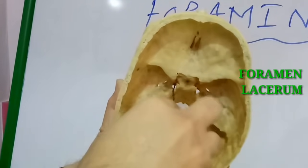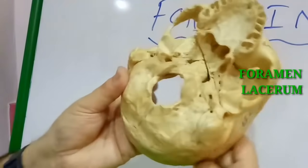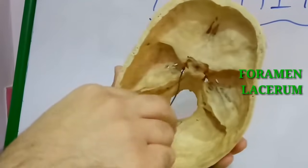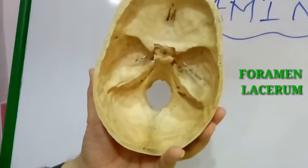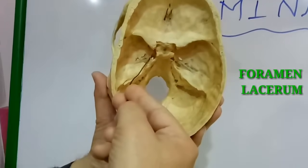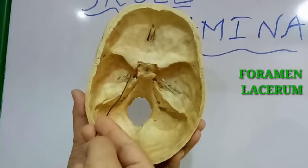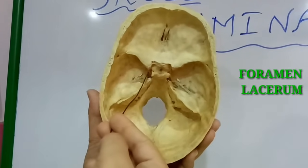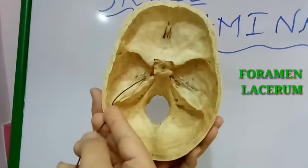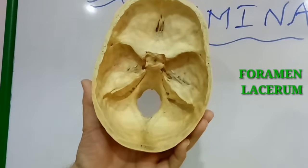Medially, there is an irregular foramen known as the foramen lacerum. The foramen lacerum transmits the meningeal branch of the ascending pharyngeal artery and an emissary vein. In the upper part of the foramen lacerum, the greater petrosal nerve and the deep petrosal nerve unite to form the nerve of the pterygoid canal, which passes anteriorly into the pterygoid canal and then into the pterygopalatine fossa. Also, the upper part of the foramen lacerum is traversed by the internal carotid artery and the sympathetic plexus around it.